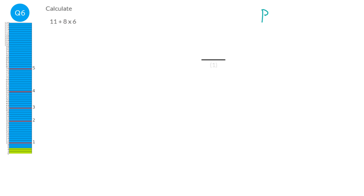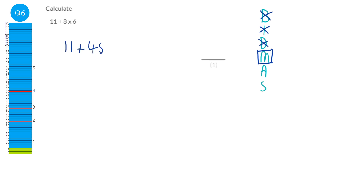To answer this question we need to remember what BIDMAS or BODMAS is — Brackets, Indices, Division, Multiplication, Addition, Subtraction. Here we've got no brackets and no indices, so those don't apply. We don't have a division, but we do have a multiplication, so we must do that first. We do eight times six, which is forty-eight. Then we've got an addition: eleven plus forty-eight is fifty-nine. You wouldn't get the same answer if you did eleven plus eight first — that gives nineteen, and nineteen times six is definitely not fifty-nine.